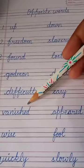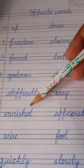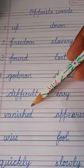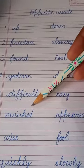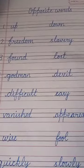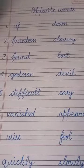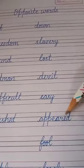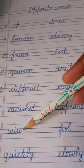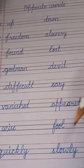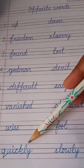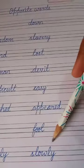Vanished — like you have seen the ad on TV, when we use detergent the stains vanished, disappear — gayab hona. Its opposite is appeared. Wise means intelligent and its opposite is fool. Quickly means when we do any work fast, and its opposite is slowly.